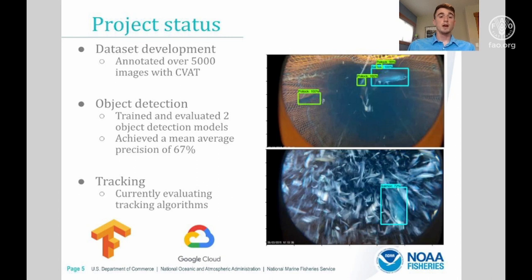Right now we're able to detect salmon and pollock with a mean average precision of around 67 percent, and you can see some of our results on the right-hand side of my slide. We're also in the process of implementing and evaluating deep learning based object trackers so that we can not only detect fish in our slides, but follow them and ultimately count them.